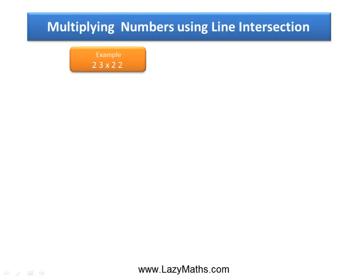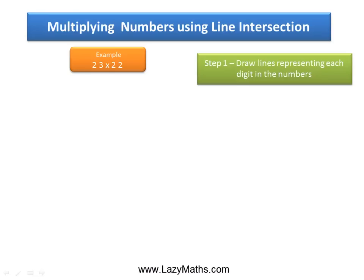Here's an example of multiplying numbers using the line intersection method: 23 times 22. The first step is to draw the number of lines representing each digit in the number.